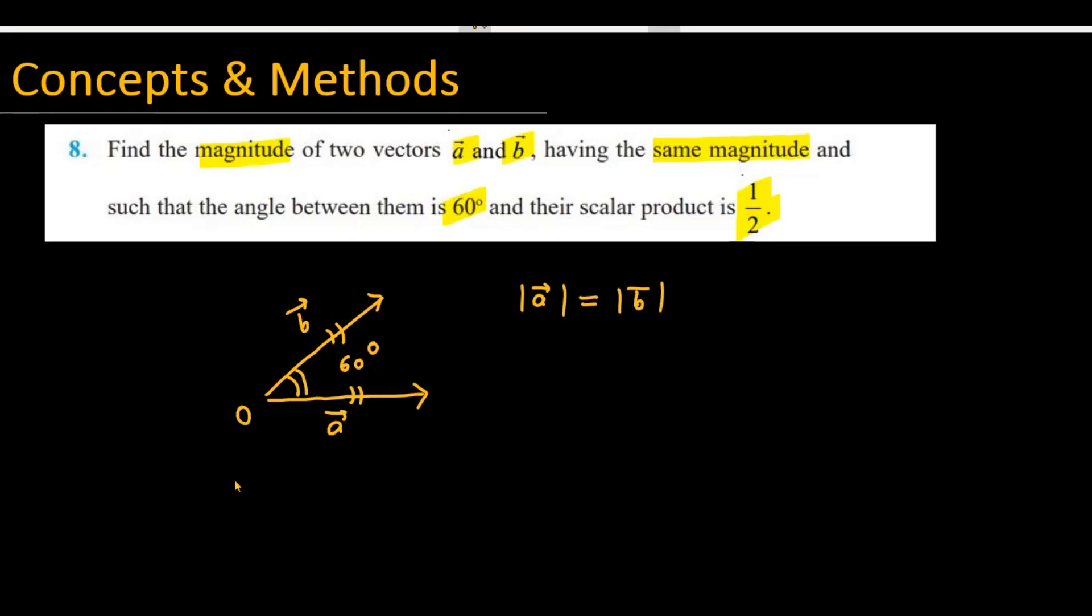The third piece of information given is that the scalar product of these vectors is 1/2. The question asks: what is the value of |A| and |B|?